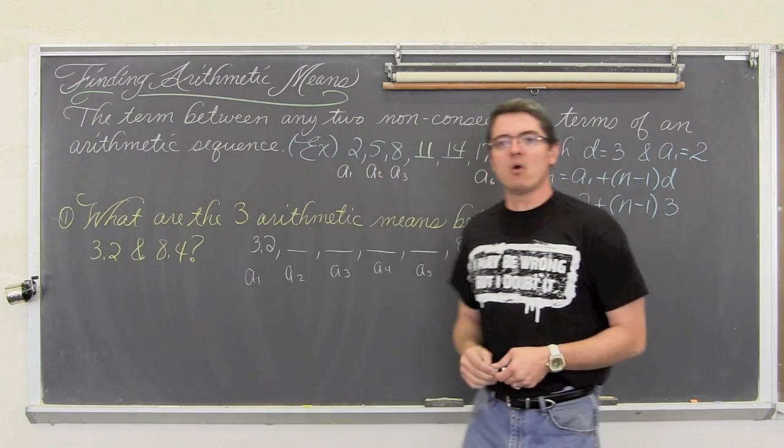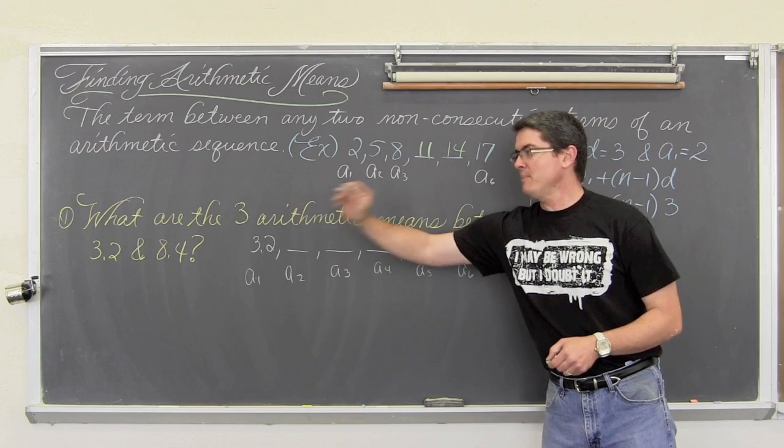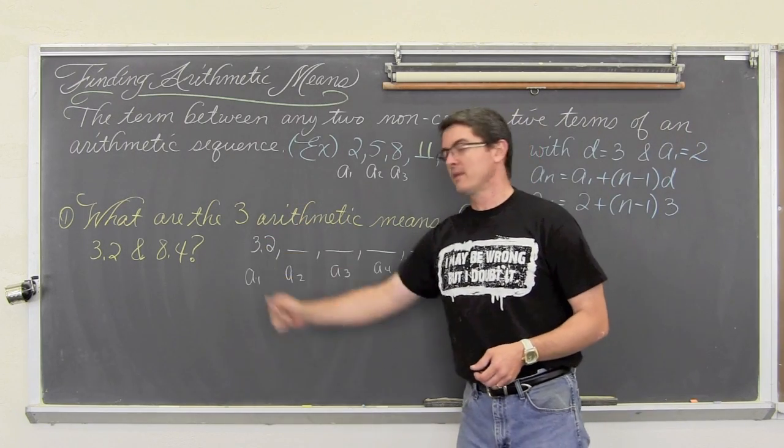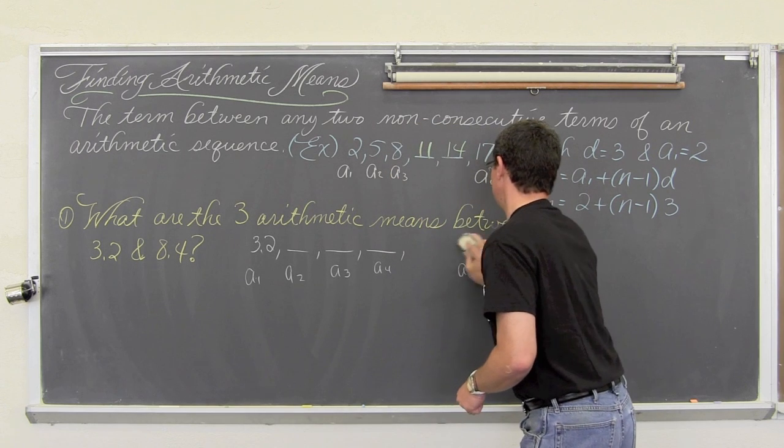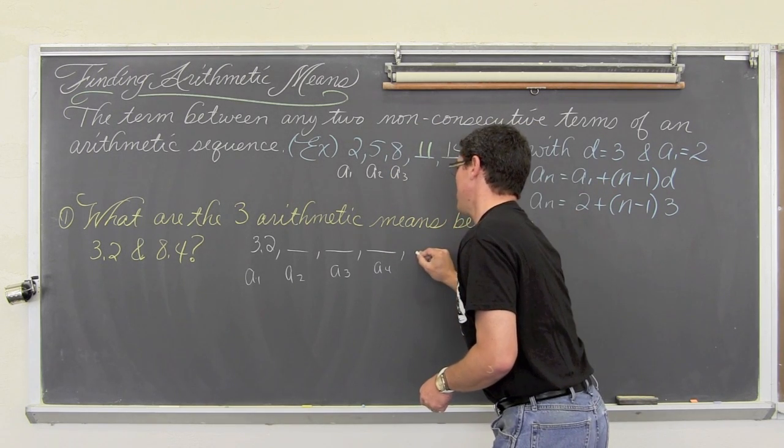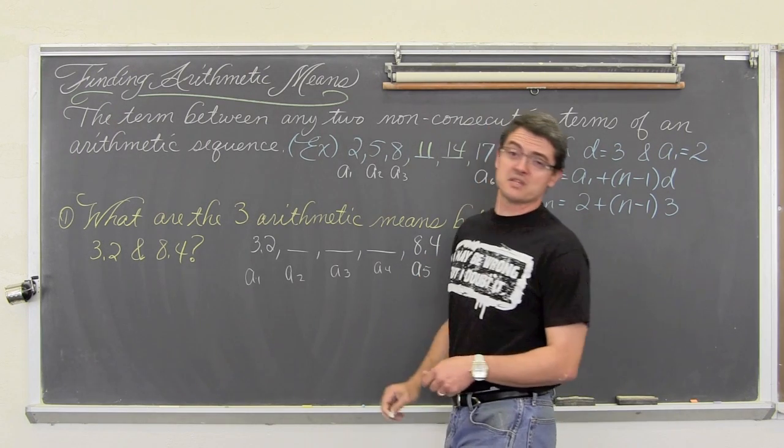Okay, let's get into a couple of problems that require some actual work. What are the arithmetic means between 3.2 and 8.4? And I have already got it laid out here, except I have got one too many blanks because I miswrote in my notes. So this is take two.